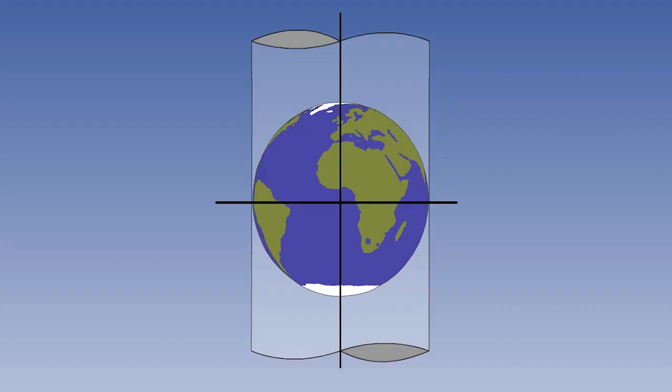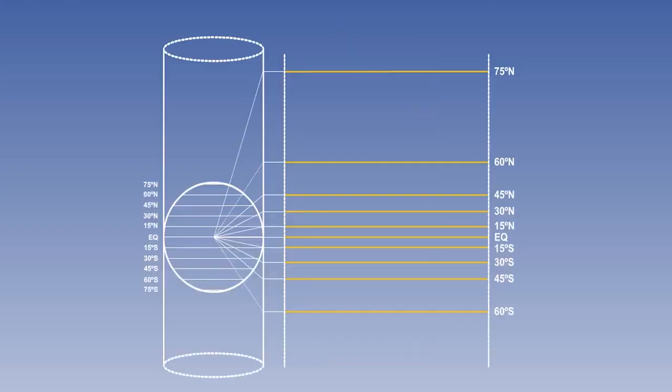In the normal or direct Mercator, the cylinder is aligned perpendicular to the equator. Another word for perpendicular is normal. Over most of the Earth, it suffers from the problem of excessive scale expansion.